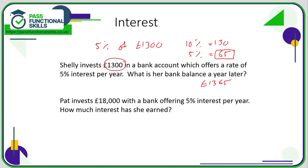The second example might actually be a little bit more straightforward, as we don't need to work out the new bank balance — simply the interest. Again it's five percent, so we're going to work out ten percent first. Ten percent of eighteen thousand is 1,800 — just knock off a zero when you're working out ten percent, provided the number ends in zero of course. If ten percent is eighteen hundred, then five percent is half of eighteen hundred, because five percent is half of ten percent. So that is nine hundred — she will earn nine hundred pounds of interest.